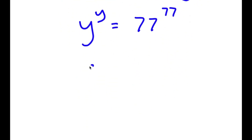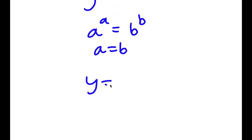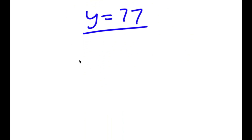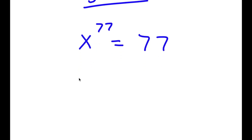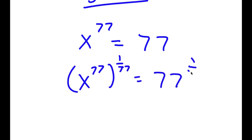Since a to the power of a equals b to the power of b implies a equals b, y equals 77. And since x to the power of 77 equals y, I have x to the power of 77 equals 77. Taking both sides to the power of 1 over 77, x to the power of 77 to the power of 1 over 77 equals 77 to the power of 1 over 77. So x is equal to the 77th root of 77.